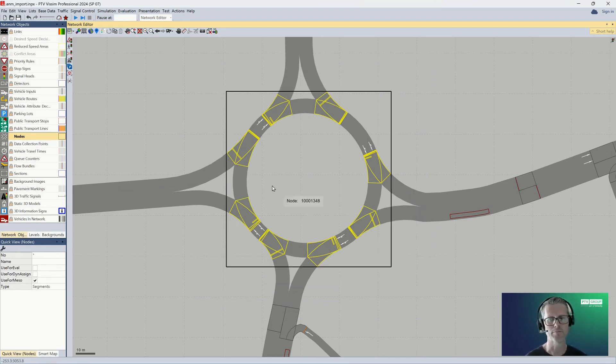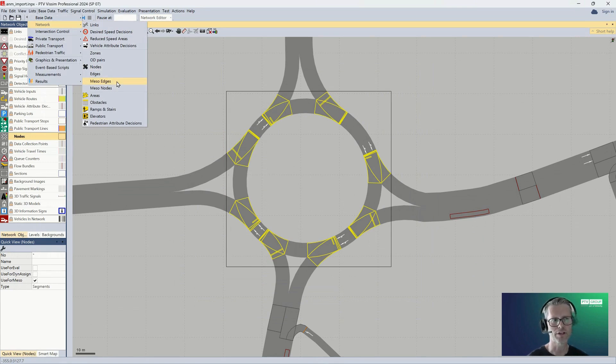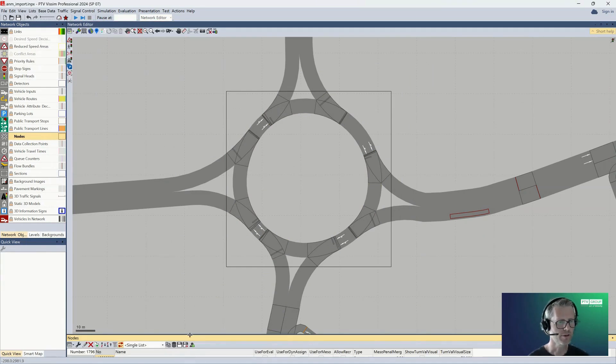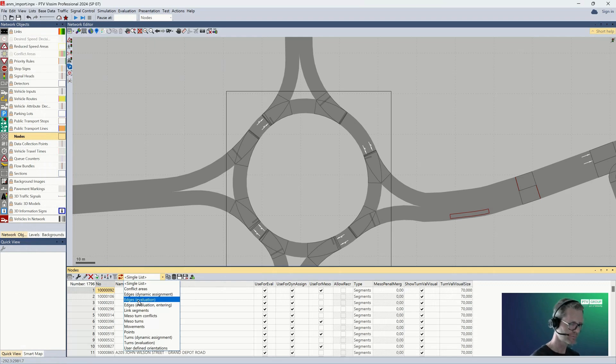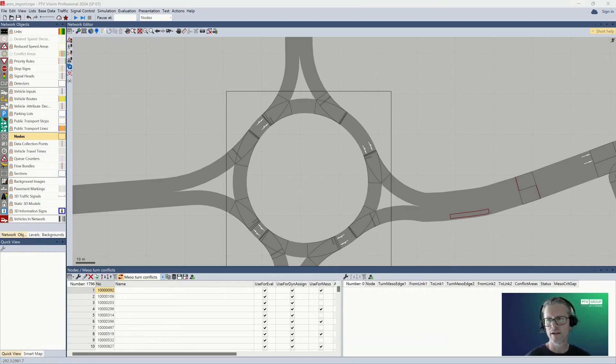What about all these mesoscopic network objects you have in your model? How can you check them? You can go in the menu to the list and then to your network, and then you can open the list for meso edges or meso nodes. Or you can go through intersection control and you can open the list of meso turns and meso turn conflicts. Another way is to open the standard list for nodes. Within the list of nodes, you have a list of coupled lists, and you can see, for example, the meso turn conflicts belonging to a certain node. Okay, let me go back to my presentation.